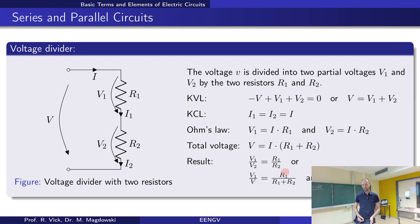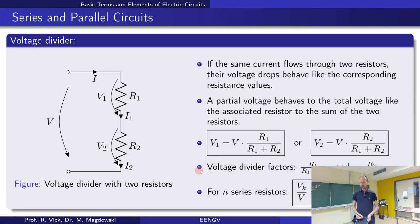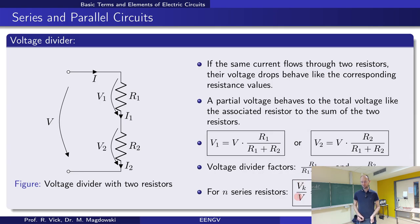We find that the ratio of a partial voltage to the total voltage equals the ratio of the partial resistance to the total resistance — this is the voltage divider rule. We can rewrite it as: partial voltage equals total voltage multiplied by partial resistance divided by total resistance. The factor (partial resistance / total resistance) is called the voltage divider factor. For n series resistors, it's always the partial resistance divided by the sum of all resistances.